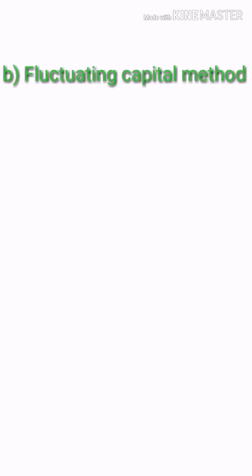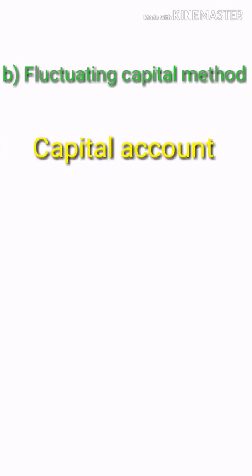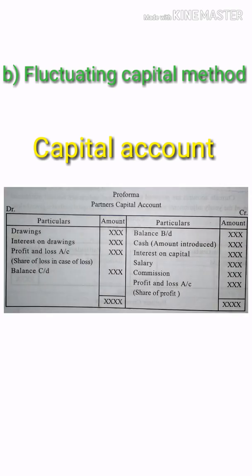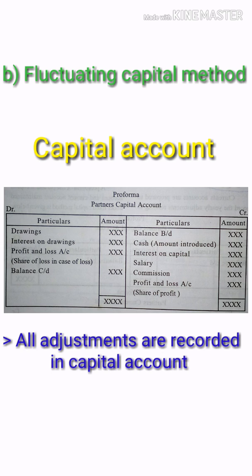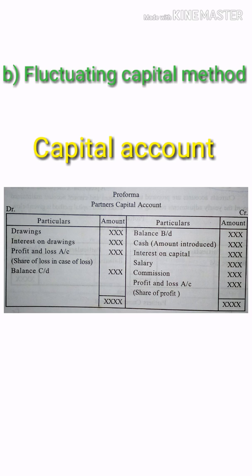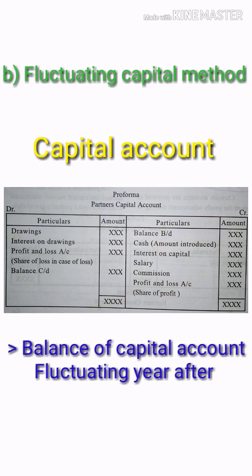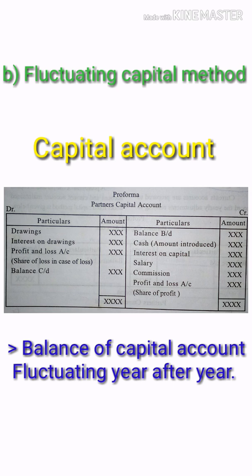Now we are going to learn the Fluctuating Capital Method. In the Fluctuating Capital Method, we have only one account prepared, which is the Capital Account — there is no separate Current Account. We record all the adjustments here. At the end of the year, the balance is different, because all adjustments are recorded in the Capital Account.